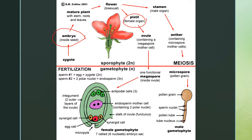Within the megaspore there is an egg cell and the polar nuclei. The polar nuclei is diploid and the egg cell is haploid. The male organ is the stamen, which contains the anther that has pollen grains. The pollen grain produces a pollen tube for the sperm, and there are two sperm within that pollen grain.